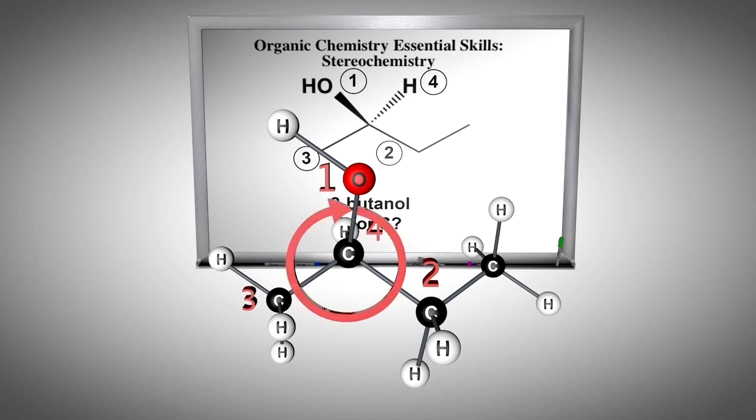Then imagine an arrow starting with highest priority to lowest. The clockwise arrow means the stereochemical modifier is R.